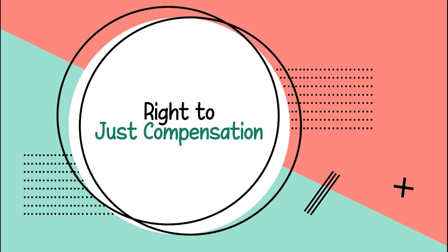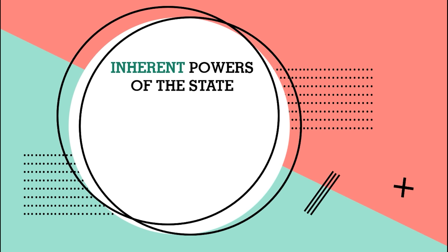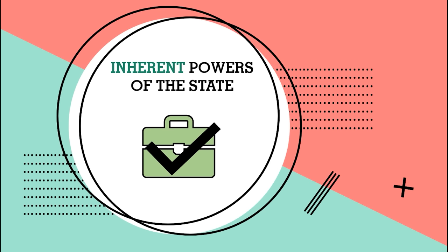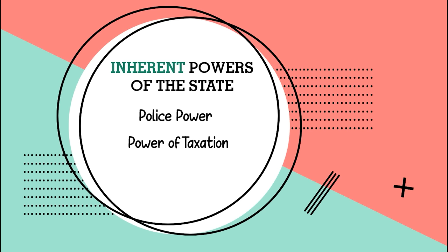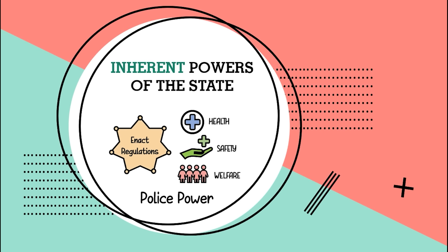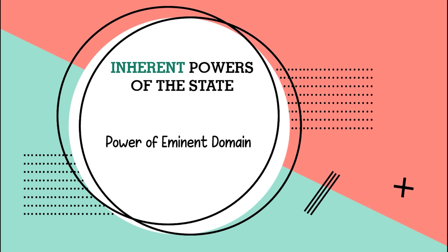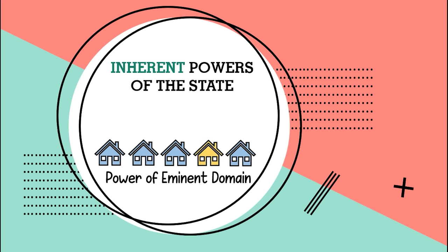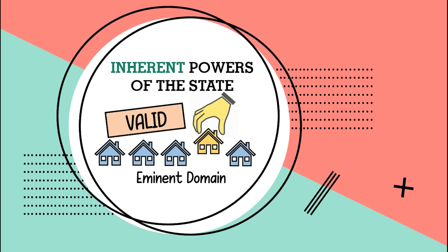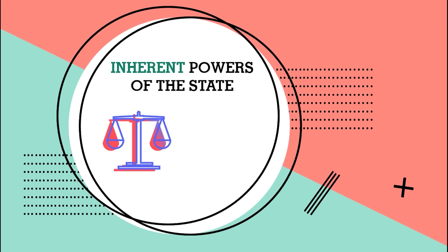Moving on to the right to just compensation. To understand this right, let's talk about the inherent powers of the state — the powers that the Congress and the President need to get the job done. First, police power: the power to enact regulations for the health, safety, and welfare of the public. Second, the power of taxation: the power of the government to impose and collect taxes. Last, the power of eminent domain: the power of the government to take private property. Eminent domain is valid when: it must be private property; the land confiscated is for public use; there must be due process of law in expropriation; and there is just compensation.